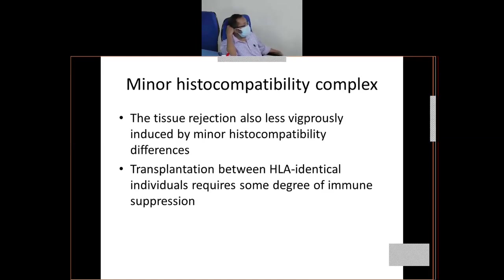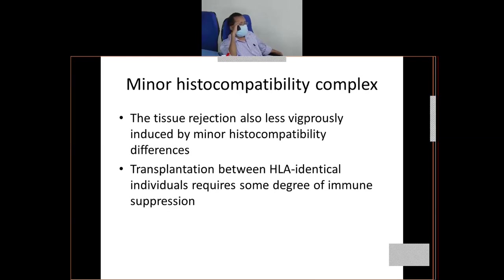Even if you do MHC matching, you will find that in the long term, some amount of graft rejection will still occur. This graft rejection will be because of the minor histocompatibility complex. Unless it is genetically similar like isograft or autograft, there will be some amount of minor mismatching in the histocompatibility complex, and ultimately in the long term you will find rejection.